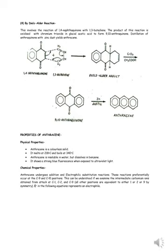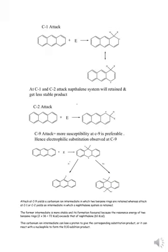Chemical properties: anthracene undergoes addition and electrophilic substitution reactions. These reactions principally occur at the C9 and C10 positions. This can be understood by examining the intermediate carbonium ion obtained from attack at C1, C2, and C9 positions. The symbol E⁺ in the following equations represents an electrophile — C1, C2, and C9 attack.